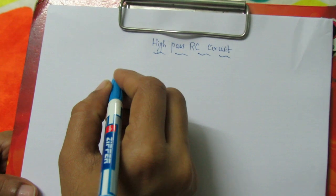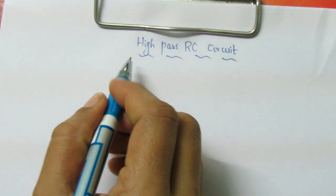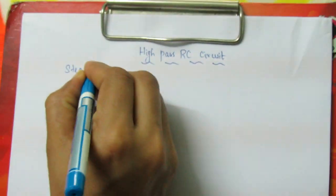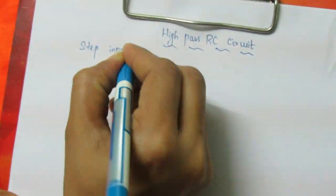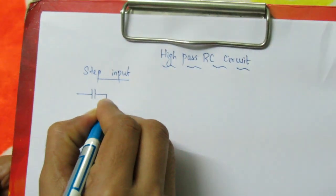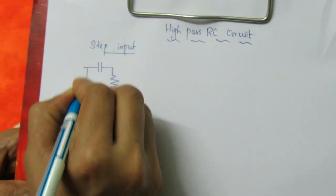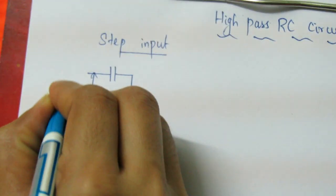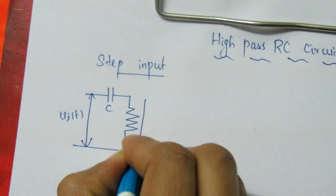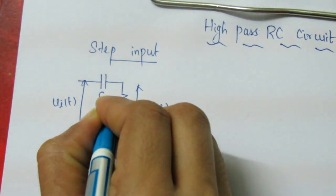In this video we will see the response of a high pass RC circuit for a step signal. We will give a step signal as input to a single stage high pass RC circuit. The output will be taken parallel to the resistor.